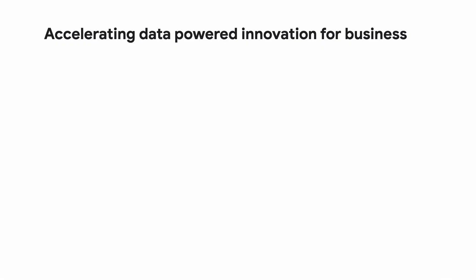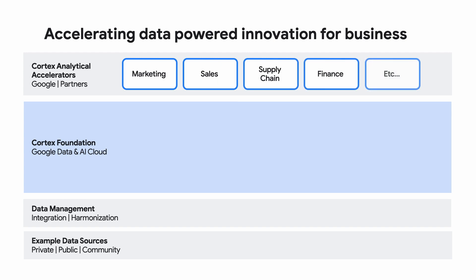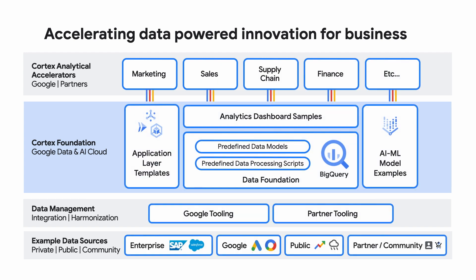In previous videos, you saw how Cortex Framework and available solution accelerators can help you integrate, process, and model data faster to unlock business insights in a consolidated data foundation on BigQuery. But what about driving better business decisions and actions from these insights? This is where Google Cloud Cortex Application Layer and Machine Learning templates come into play. The Application Layer is the interactive entry point for applications and interfaces to make the most out of the Data Foundation together with machine learning add-ons.